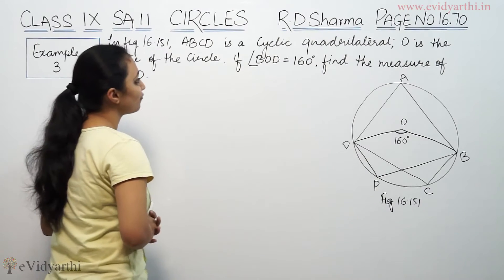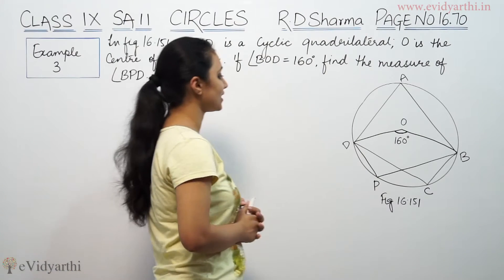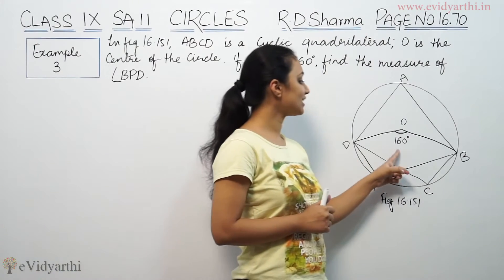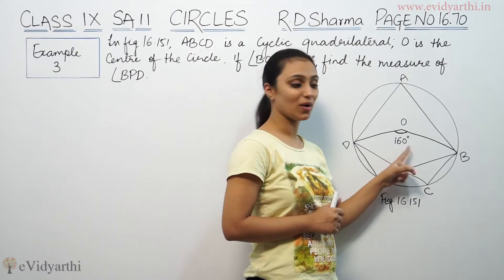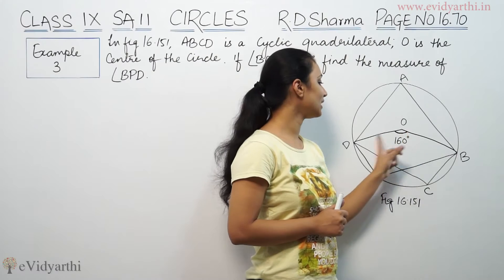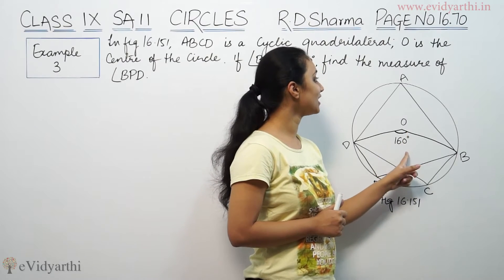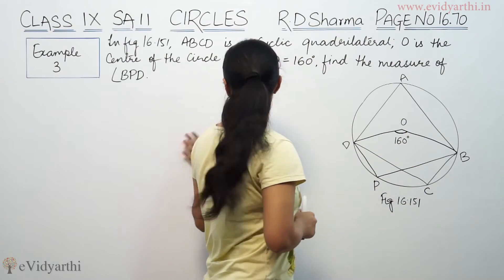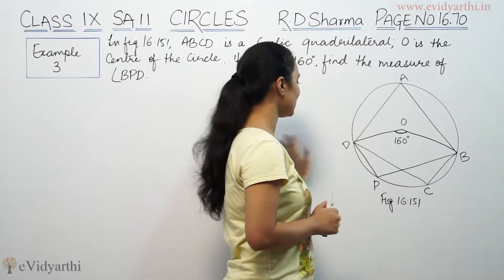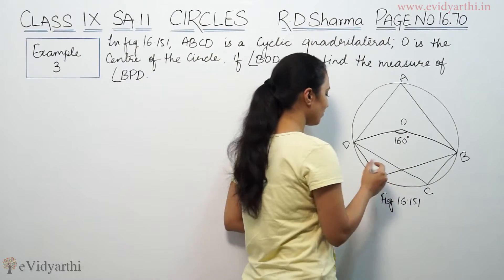O is the center of the circle. If angle BOD is 160 degrees, find the measure of angle BPD.